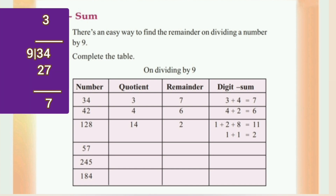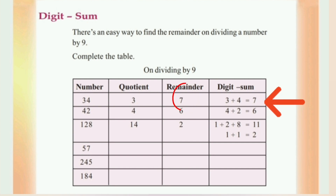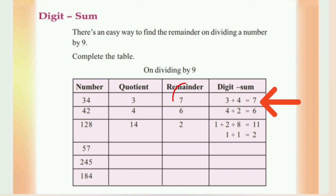Number 34 divided by 9. 3 into 9 is 27, so the quotient is 3 and the remainder is 7. Now, 3 plus 4 equals 7. The digits in the sum equal 7, which is the remainder. So when dividing a number by 9, the digits in the sum — 3 plus 4 equals 7 — will be the remainder.